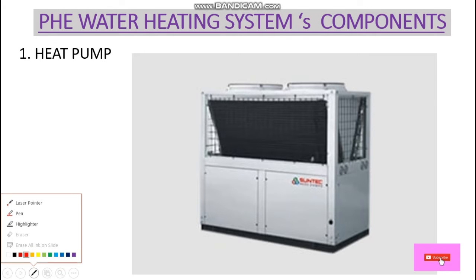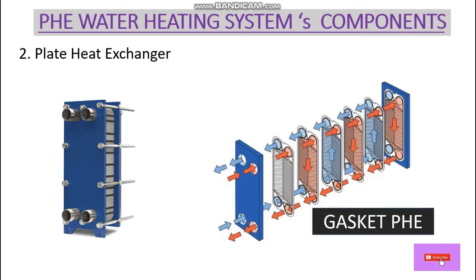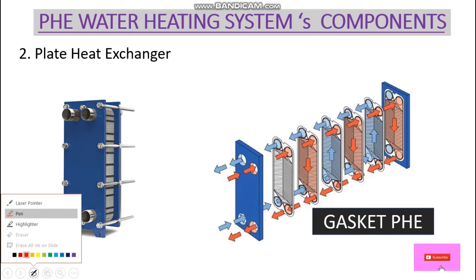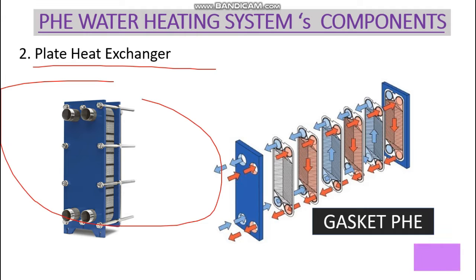Let's discuss the major components of the hot water generator system, or we can say PHE type water heating system. The first one is the heat pump, then we have a PHE type — that is, a plate heat exchanger. This is a gasket type PHE, and this is the view of the PHE.